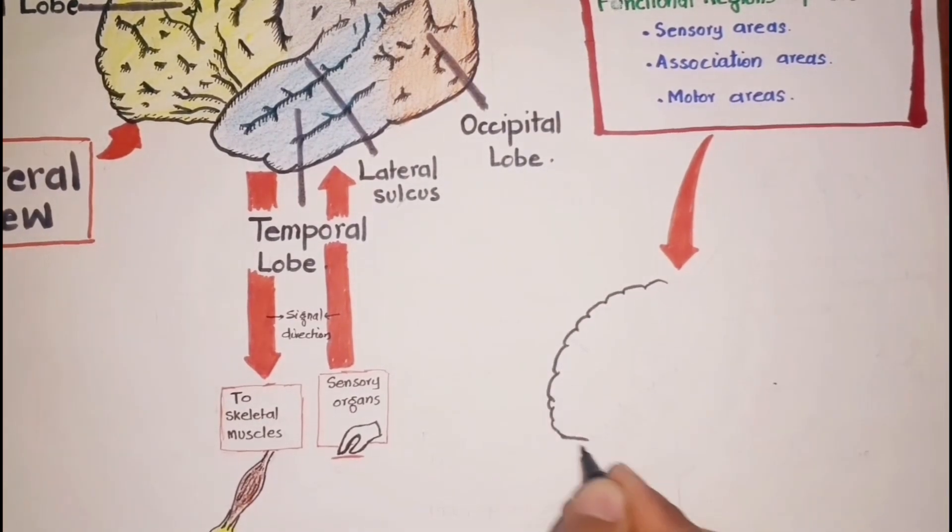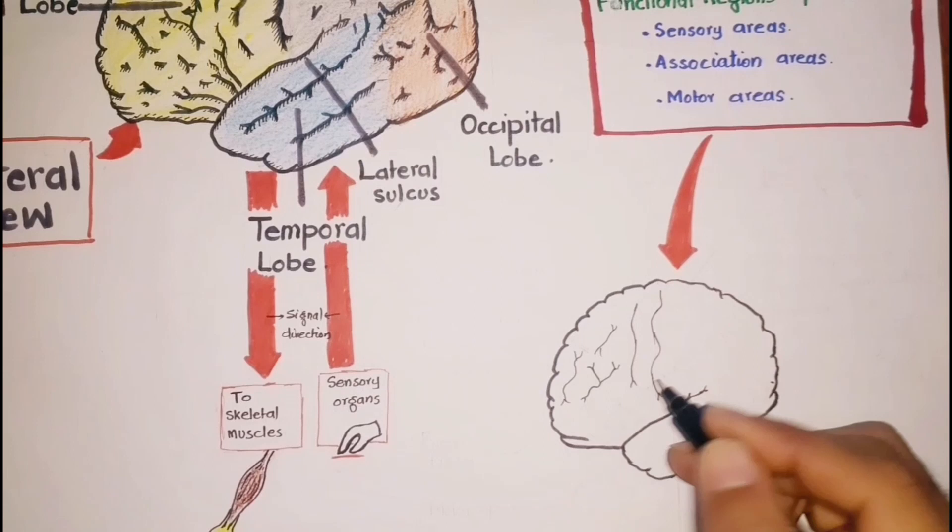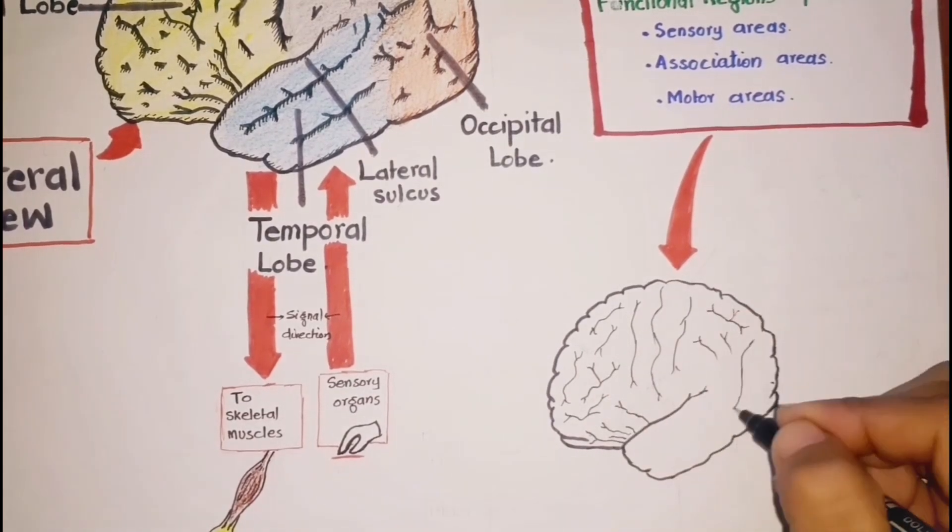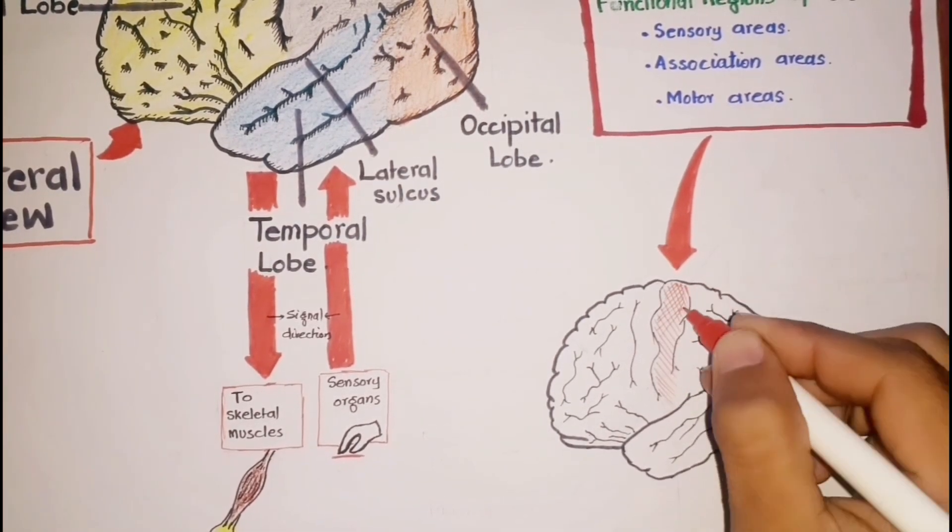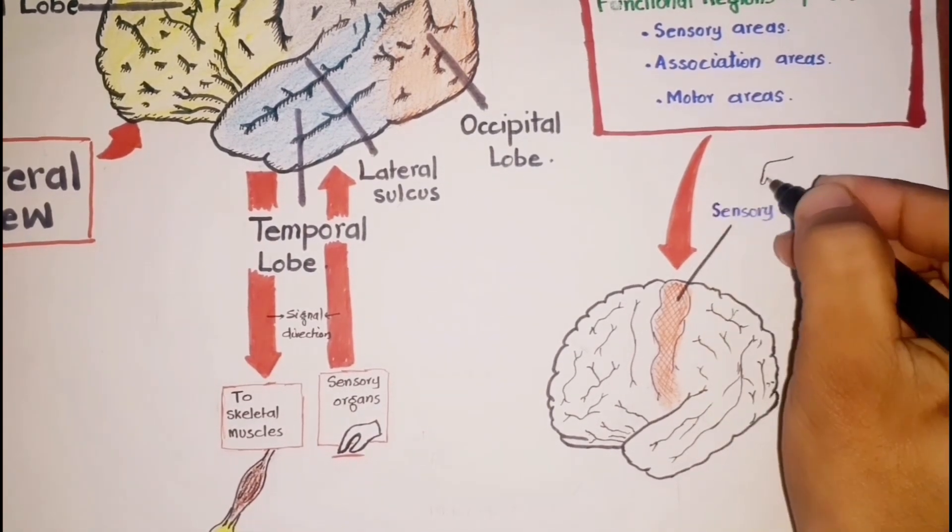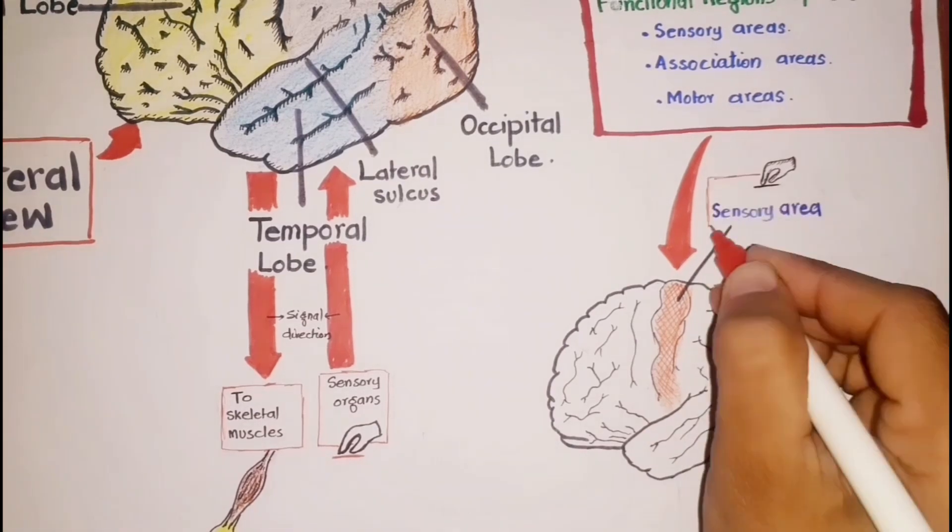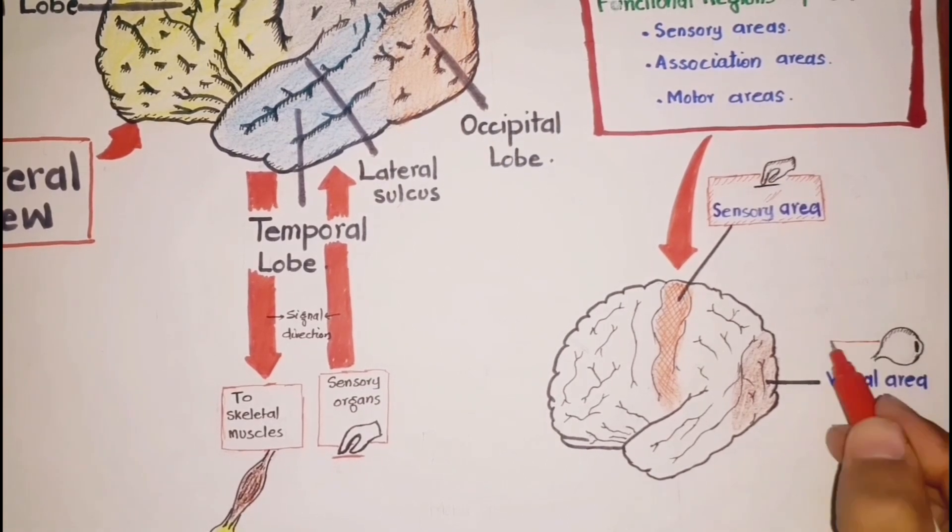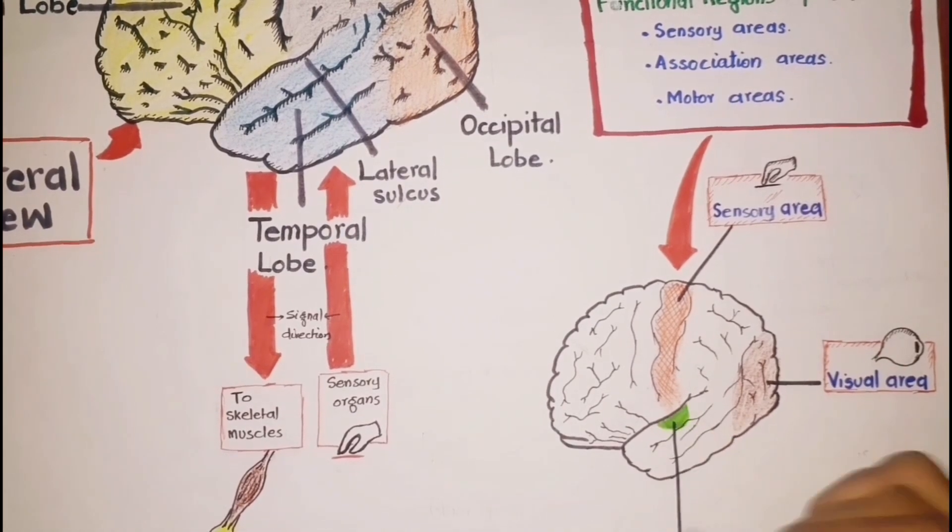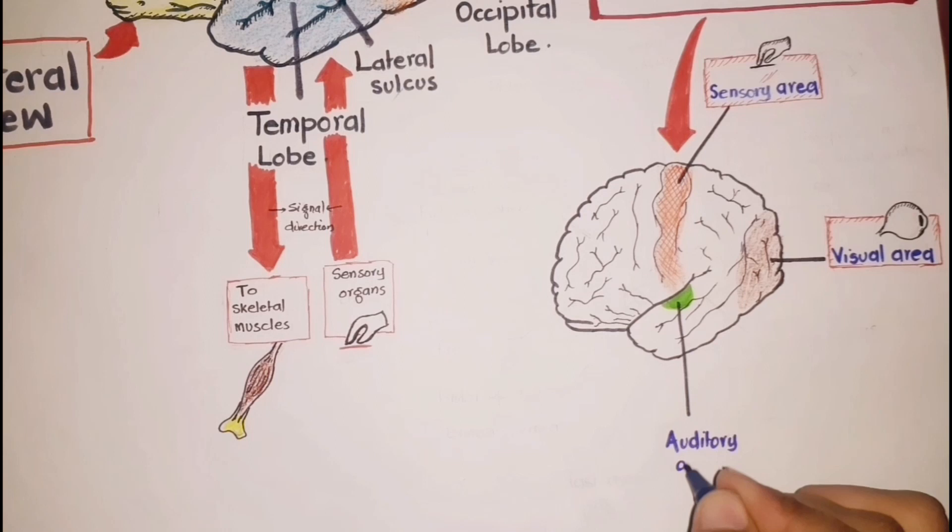Here is a side view of the brain that I am drawing to show the different functional regions of the cerebrum. The sensory areas in several lobes of the cerebrum are involved in perception and receive impulses that arrive from sensory receptors. These impulses produce feelings or sensations. For example, sensations from all parts of the skin arise in the anterior parts of the parietal lobes along the central sulcus. The visual area is located in posterior parts of the occipital lobes, and here is your auditory area in the temporal lobe.